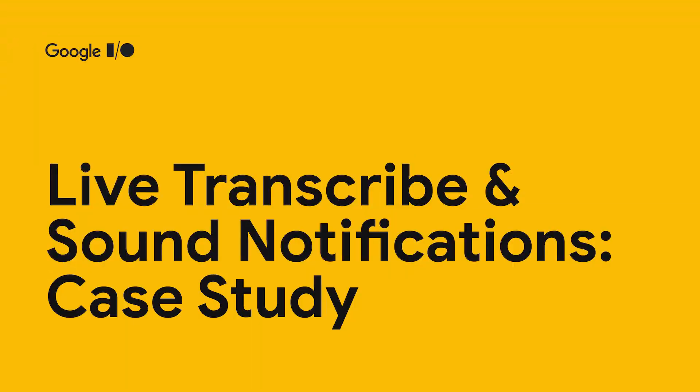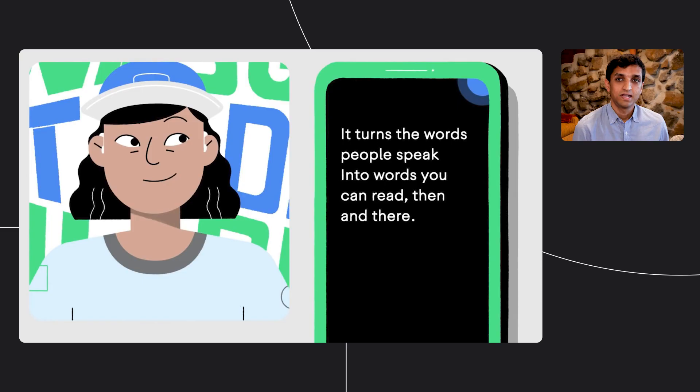Hi, I'm Sagar. I work in the machine perception team in Google Research. My team's mission is to help machines understand the world like humans do. We work on Live Transcribe and sound notifications. Live Transcribe is an app for deaf and hard of hearing people to get captions for real-time conversations in over 80 different languages.